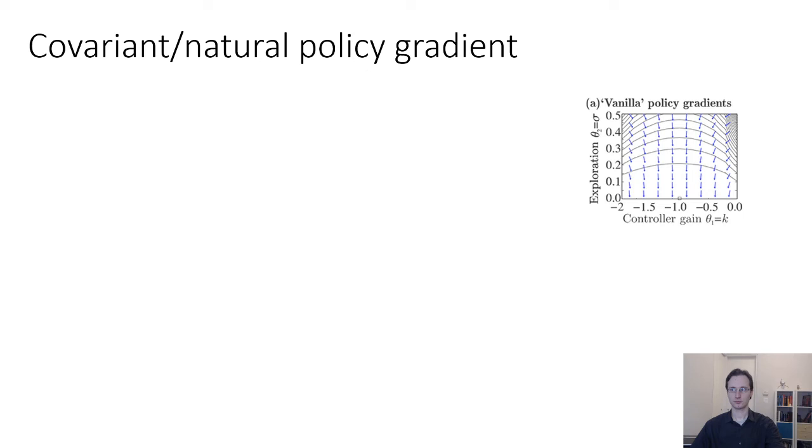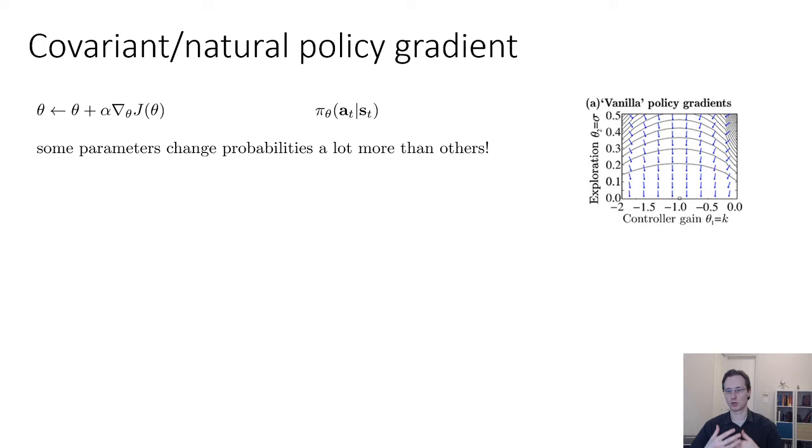So what I'm going to discuss next is how we can arrive at a covariant or natural policy gradient. When we take a gradient step via policy gradient, when we take a gradient ascent step, choosing the step size for this type of gradient can be very delicate because some parameters affect the policy distribution a lot and some don't affect it very much. So it's very hard to pick a single step size that works well both for k and for sigma because the derivative with respect to sigma is going to get really large, whereas the one for k won't. So what's really going on here is that different parameters affect the policy to different degrees. Some parameters change the probabilities a lot, others don't change it very much.